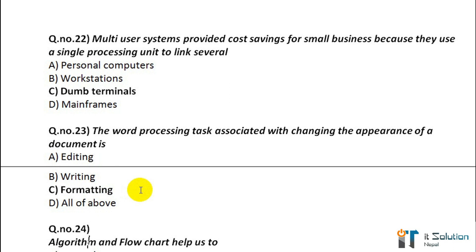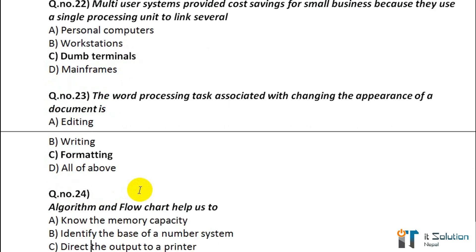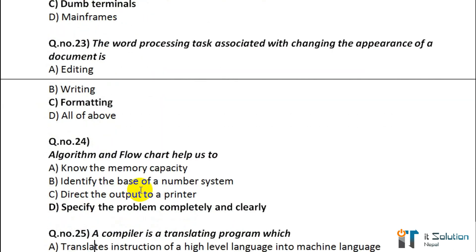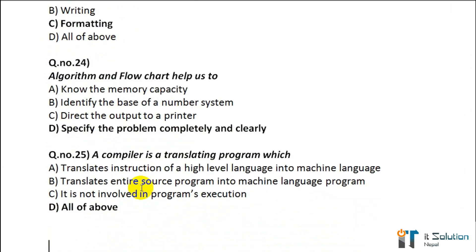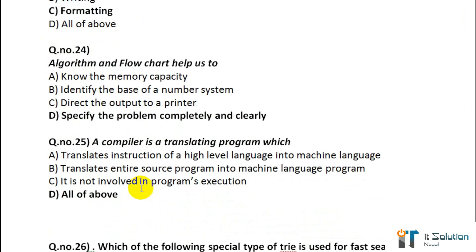Question number 24: Algorithms and flowcharts help us to — option D — specify the problem completely and clearly. Question number 25: A compiler is a translating program which — its correct answer is all of the above.